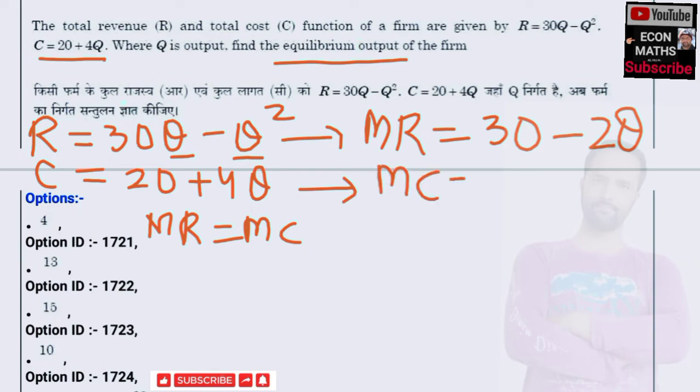Similarly, marginal cost is the derivative of the cost function with respect to output. The derivative of the constant 20 is 0, and the derivative of Q is 1, so marginal cost is 4.